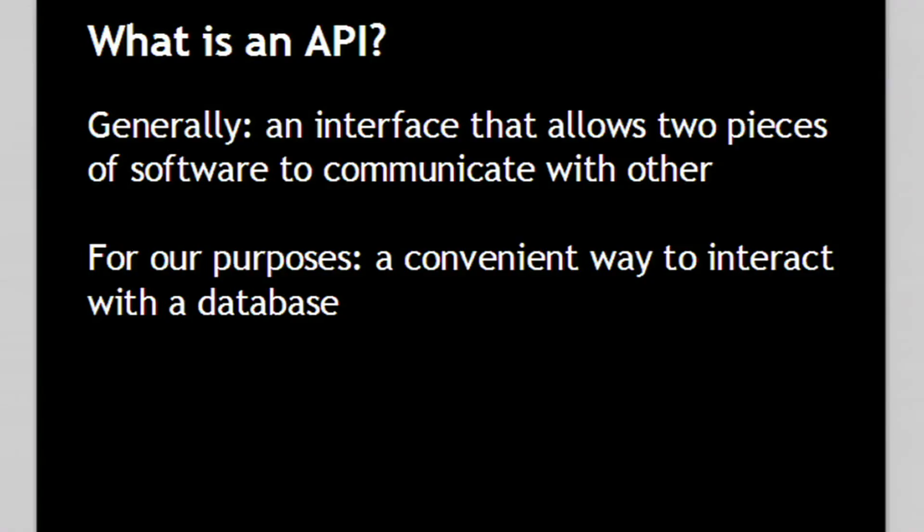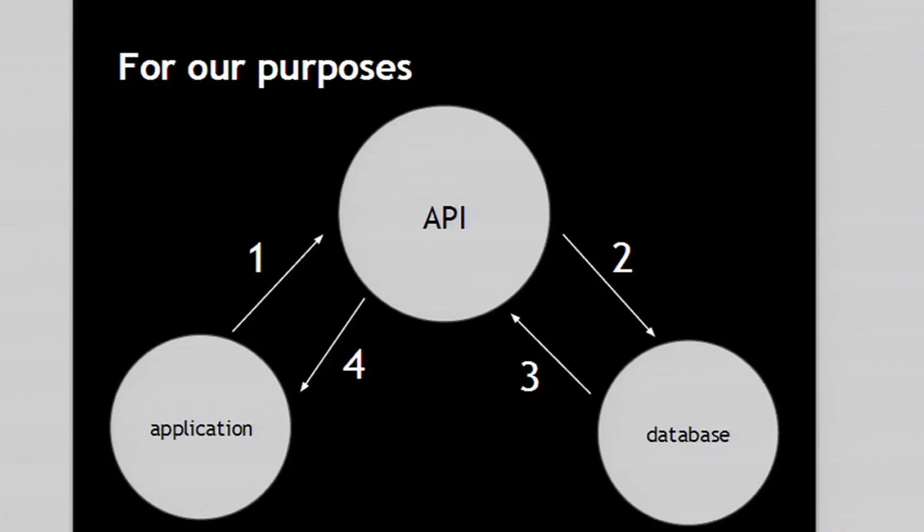So in general, what is an API? In very broad terms, it's sort of just a middleman that allows two pieces of software to communicate with each other. What we really want is some sort of useful middle ground to communicate with some sort of database somewhere. Basically, we are an application and we want to get data from a database, but we don't want to query the database directly — instead, we want to go through this middleman, the API.